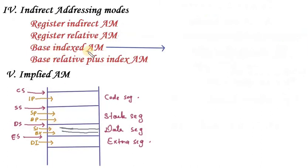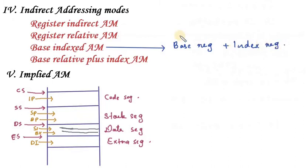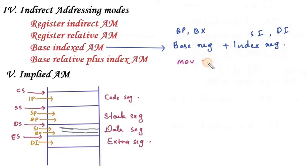Next is Base Indexed Addressing Mode. Here the operand address is calculated as Base Register plus Index Register. The base registers are BP and BX, and the index registers are SI and DI. For example: MOV CL, [BX + SI], where BX is the base register and SI is the index register.